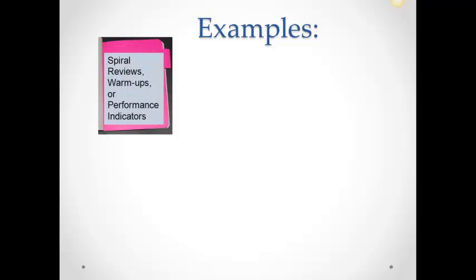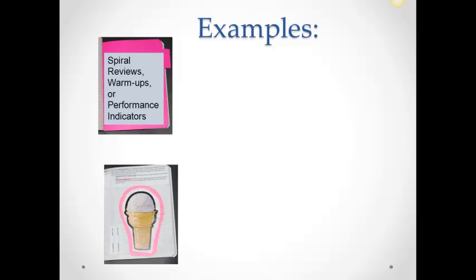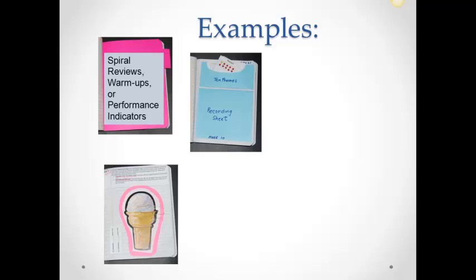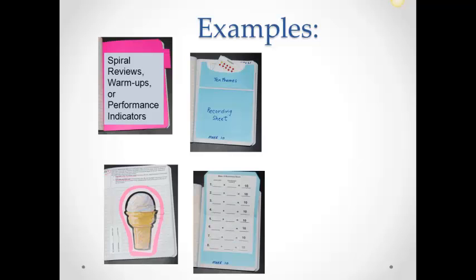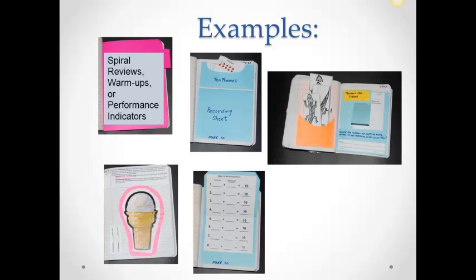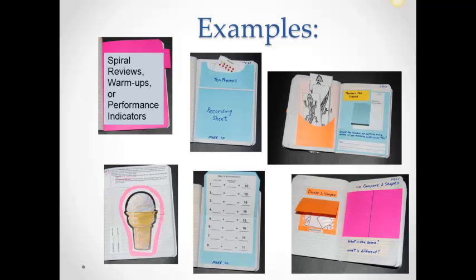These are examples of activities that can be included in an interactive math journal. Spiral reviews or warmups or performance indicators are used by some teachers and stored behind a tab which students create with a file folder cut to fit the journal. Activities which students need to return to later for practice, such as the 10 frames activity in the center of this page, can hold the manipulatives in a pocket with the corresponding worksheet below under a flap. Other examples are measure the lizard and comparing two shapes.